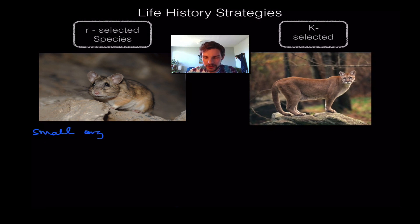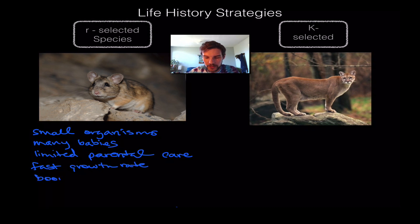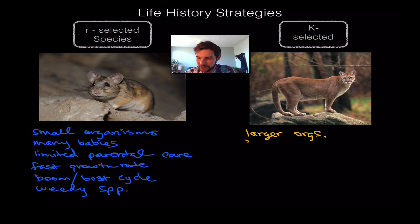R-selected species are usually going to be small organisms — it doesn't have to be just animals, it can be plants as well. They're going to have many babies and they are not going to care for those babies, so limited parental care. They are going to have a fast or high growth rate and they're going to go through boom and bust cycles — their population size goes up really high and then it crashes. They are known as the weedy species.